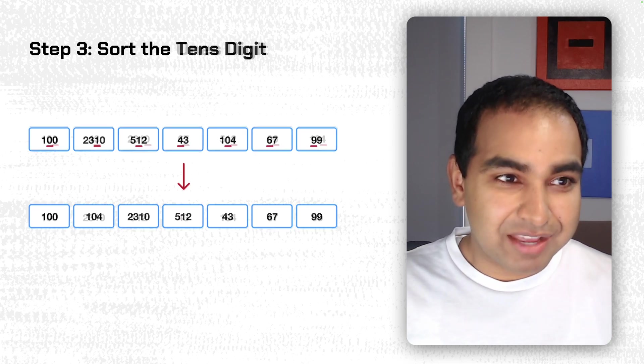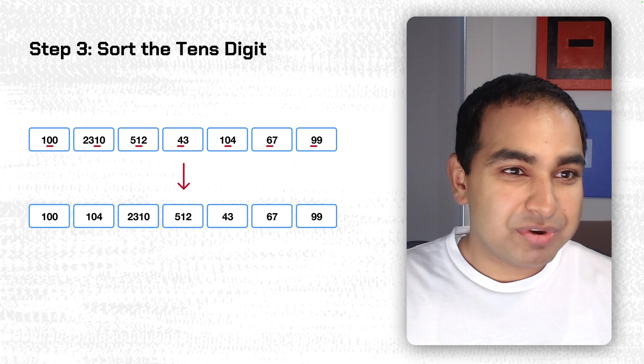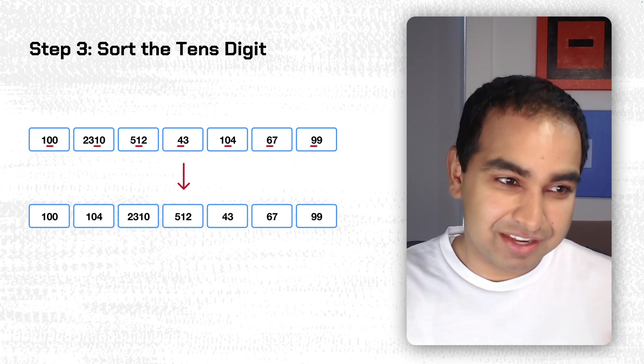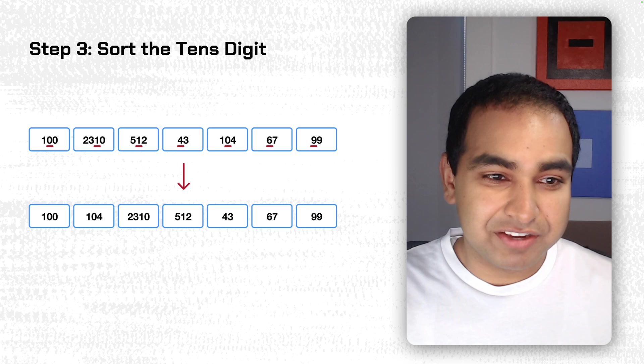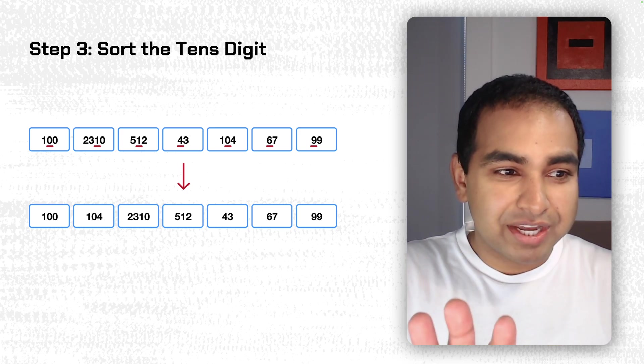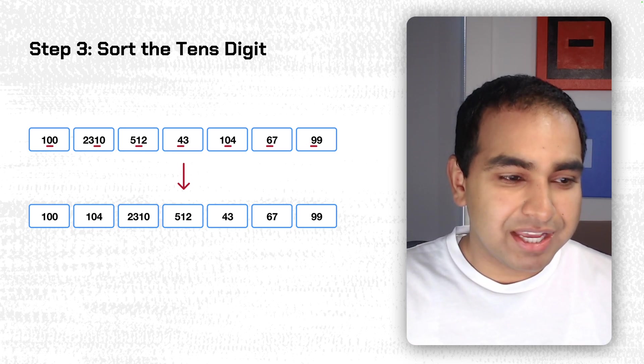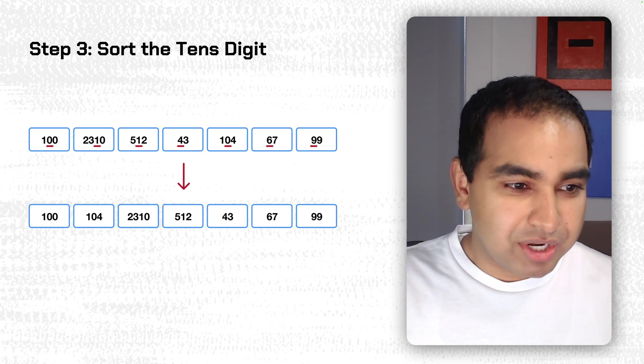So next step, we move over to the left by one more space. And now we're sorting by the 10s digit, which means, again, the 0 in 100, the 1 in 2310, 1 in 512, and so on. So if we kind of put our blinders on and only look at the second, the 10s digit, and we sort the values by that,